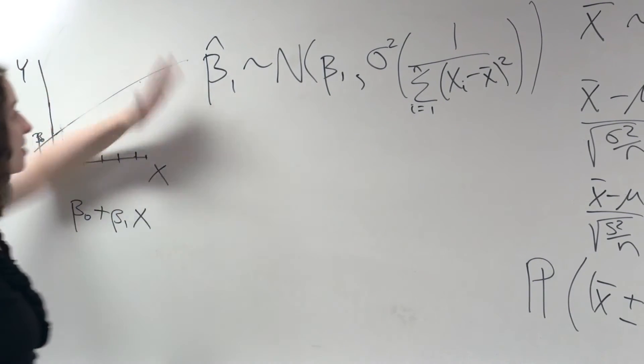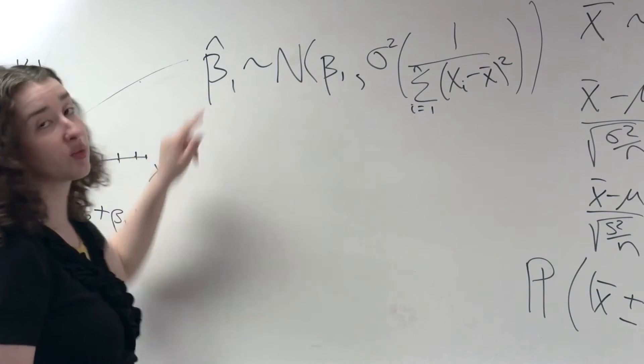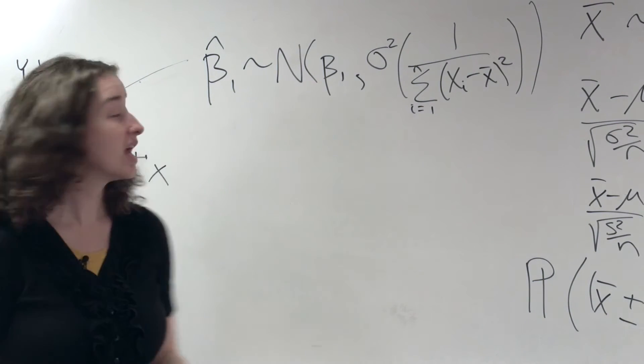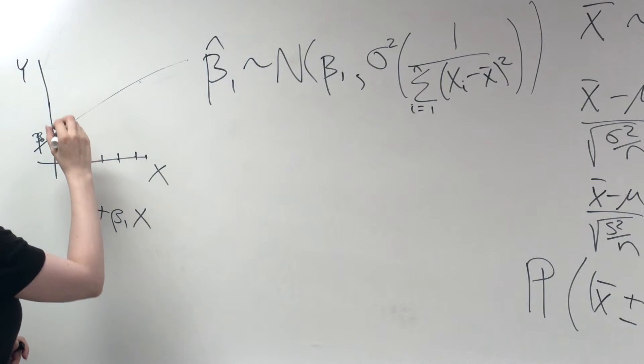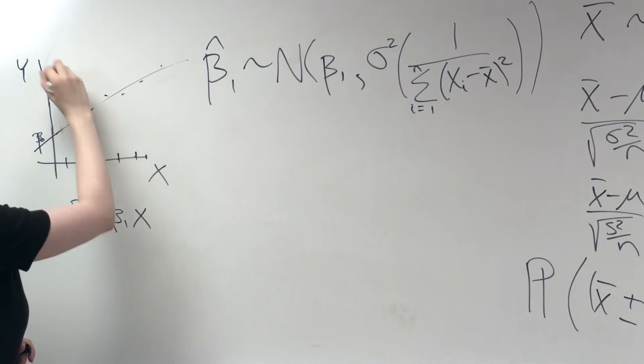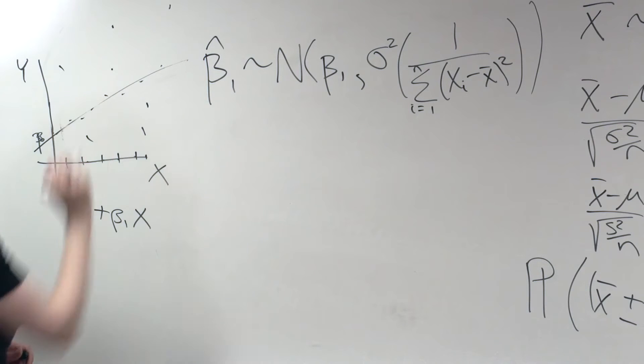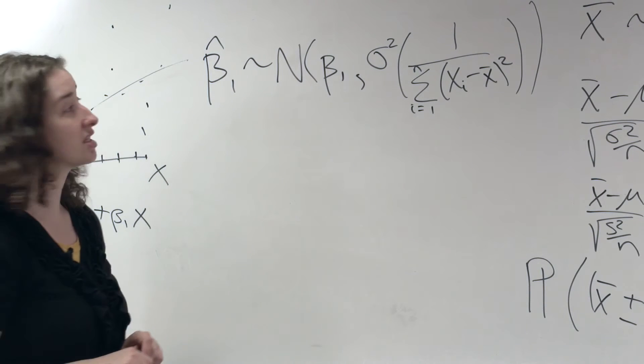The bigger sigma squared, the bigger the residual variance, the more we'd expect our estimate of the slope to vary. And that makes sense, because I'd expect my estimate of the slope to be better if the points are very close to the line than if the points are really very far from the line. I'm less likely to get a slope estimate that's close to the truth.